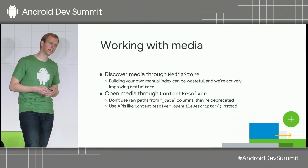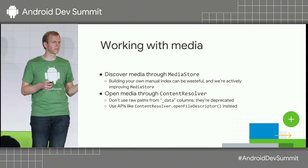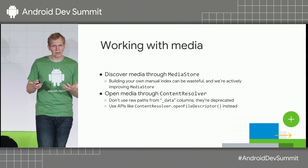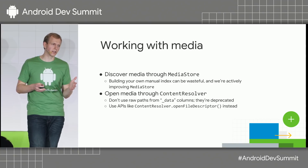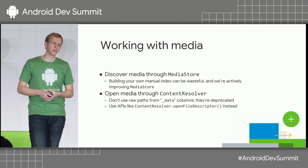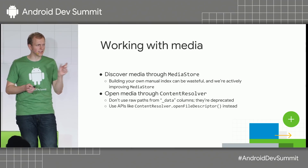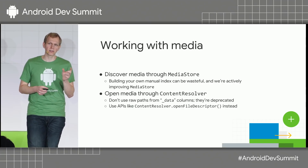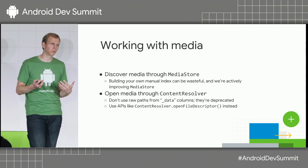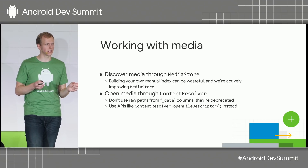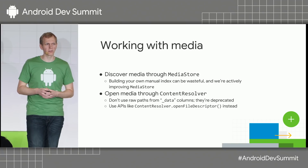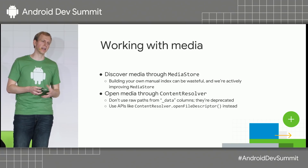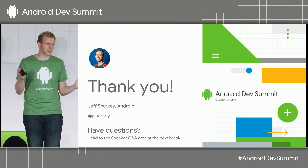Finally, for working with media, we recommend using MediaStore to find photos or videos on the user's device rather than building your own index, which can waste CPU and battery. We're actively working on improving MediaStore and adding functionality — so stay tuned over the next couple of releases. Also, open media content through ContentResolver rather than using raw file system paths from the underscore-data columns, which have been deprecated and will continue to be. Thank you for your time — I'll be available in the Q&A section if you have questions.